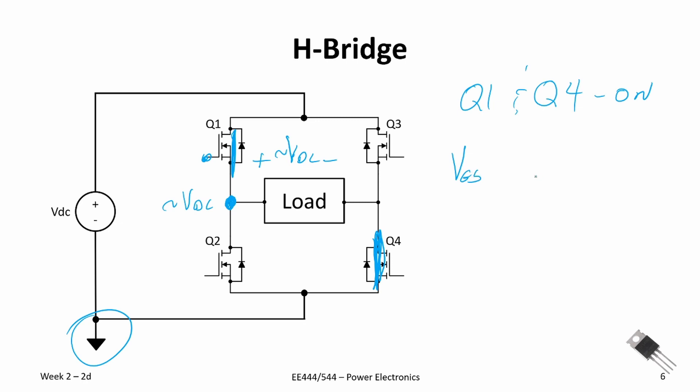But we also know that we need a gate to source voltage that must be positive. Therefore this implies that our voltage on the gate relative to our reference has to be even greater than our DC supply.